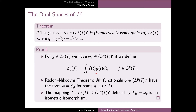A deeper result, the Radon-Nikodym theorem, states that every functional on L^p in fact has this same integral form for some function g in L^q. In the final part of the theorem, we show that the mapping from g in L^q to the functional φ_g is an isometric isomorphism between L^q and the dual of L^p. The surjectivity of this mapping follows from the Radon-Nikodym theorem, which states that all functionals on L^p are in the range of this mapping.